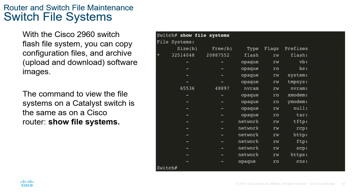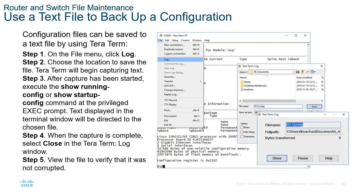Switches also have a file system — use 'show file system' similarly. To back up configuration using a text file, you can copy and paste the configuration from your terminal (e.g., PuTTY or TeraTerm) into Notepad and save it.